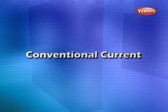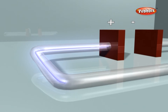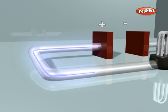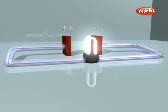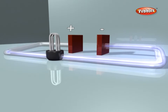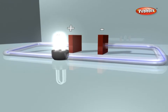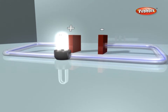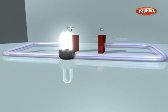Conventional current. It is a convention to say that electric current flows from the positive end of a wire to its negative end. In fact, in a metallic wire, it is the electrons which drift from the negative end to the positive end of the wire. We call this the electronic current. The electronic current is equivalent to conventional current flowing from the positive to the negative end of the wire.